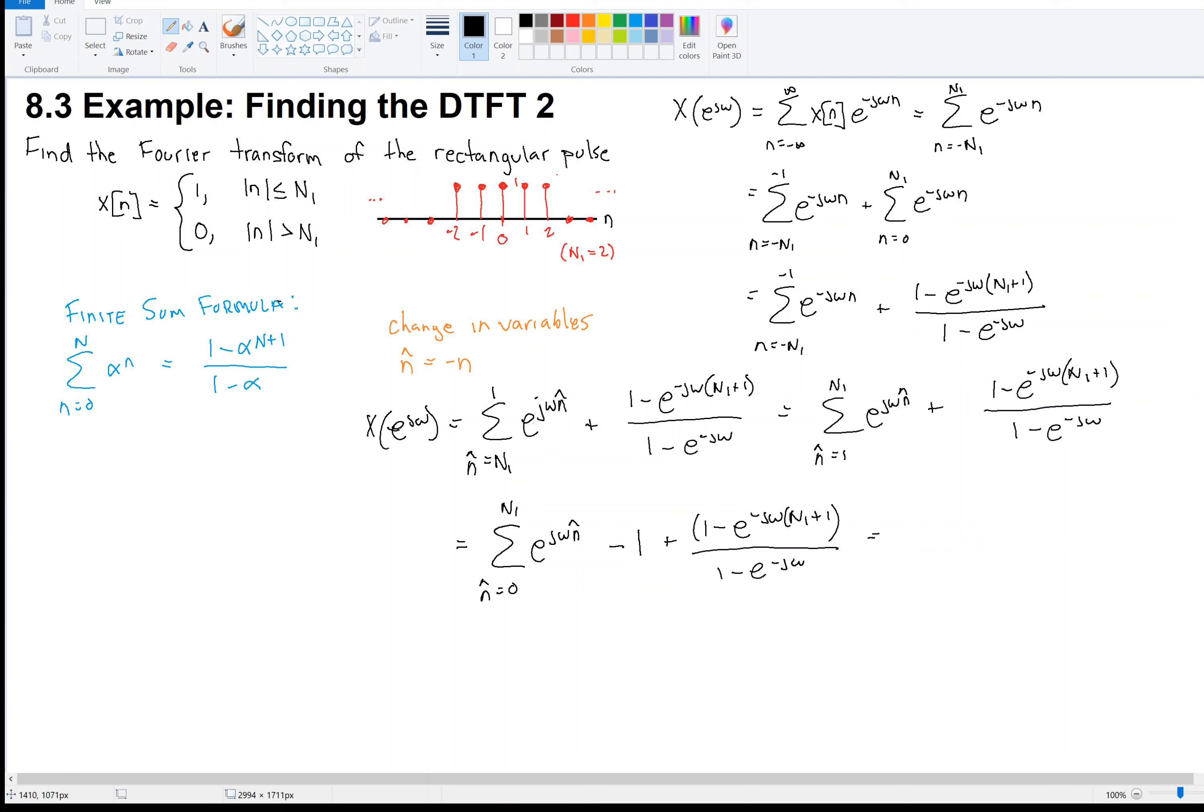Now, we can apply the finite sum formula to this thing. And this becomes 1 minus e to the plus j omega n1 plus 1 over 1 minus e to the j omega minus 1 and then plus what we had. Now, observe the handling of the exponents. How we have this plus j omega and we have the minus j omega. What does that usually indicate? Yes. That we have a sine or a cosine.